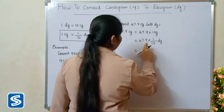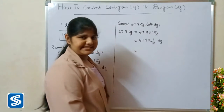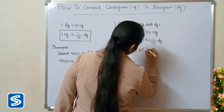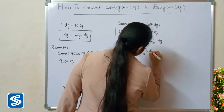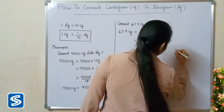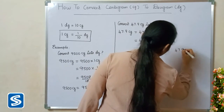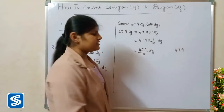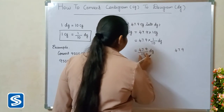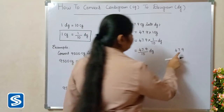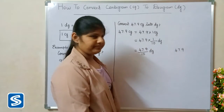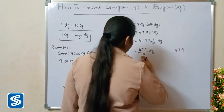47.9 multiplied by 1 will be 47.9. So 47.9 divided by 10 decigrams. The easy way to divide a decimal number by 10 is to move the decimal point one place to the left, because 10 has one zero.